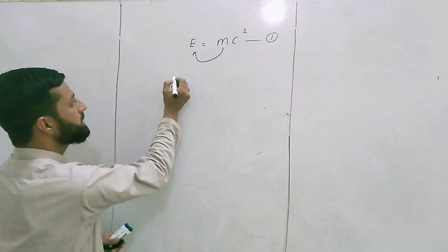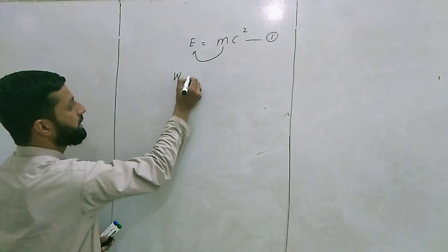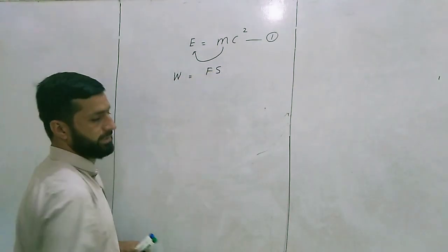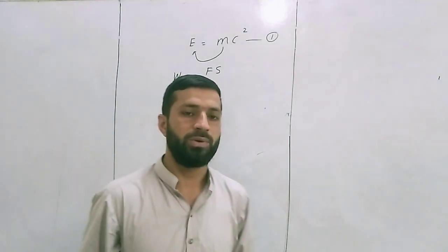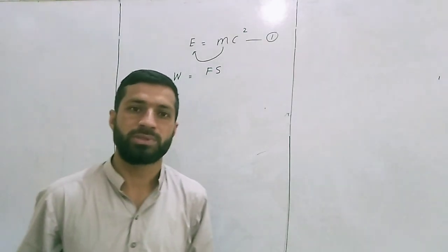So let's start. As we know, work done is equal to Fs. Work done is given as the product of force and displacement, the dot product of force and displacement.